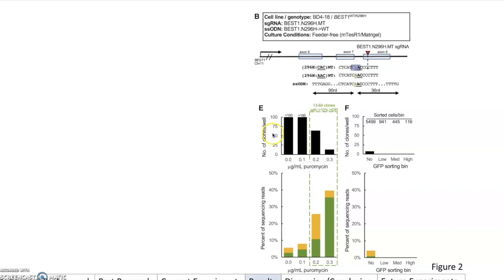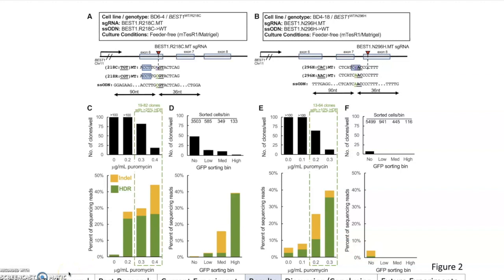There's a lot of similarities to the first part of Figure 2. You have, at lower concentrations, a lot of clones that are generated. And then the higher you go, of course, the less clones that you'll get. But if you look down here, you get more HDR shown in green. It's pretty drastic over here. For the GFP sorting bin, you barely have any clones that survived the sorting, and then there is minimal data on the HDR versus indel percentage. Just to recap, this Figure 2 was trying to demonstrate how puromycin treatment fares against the GFP method that was used before.